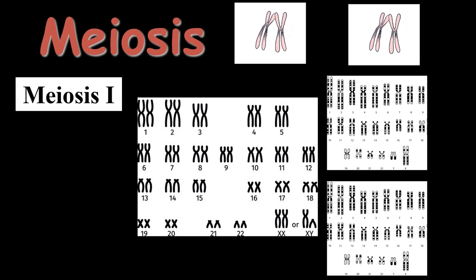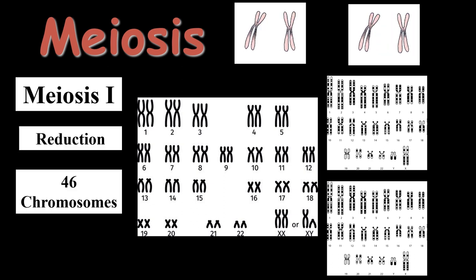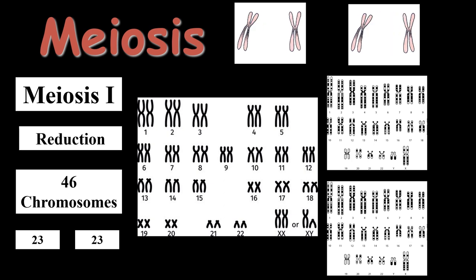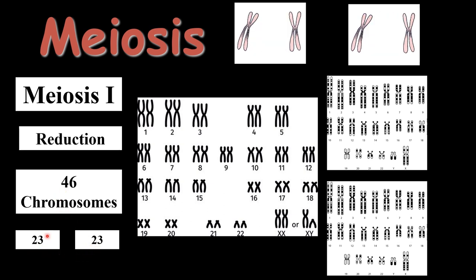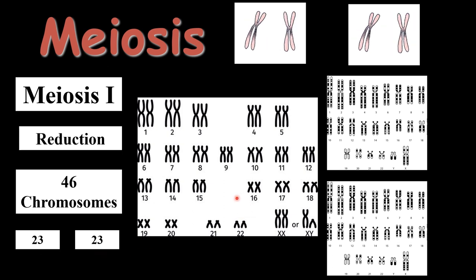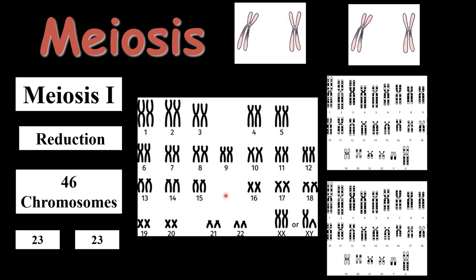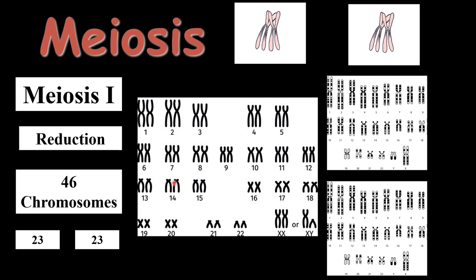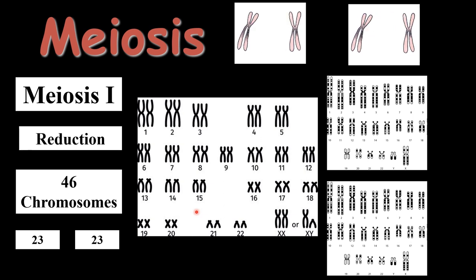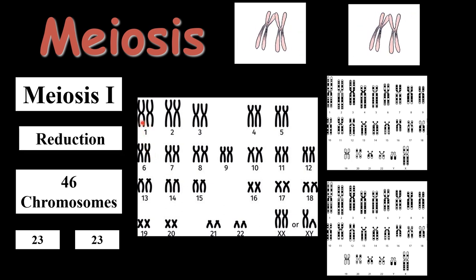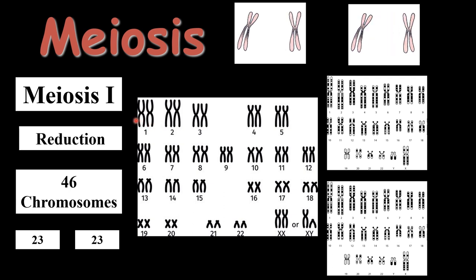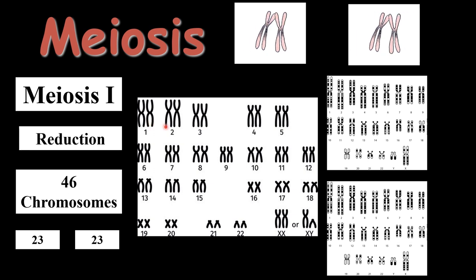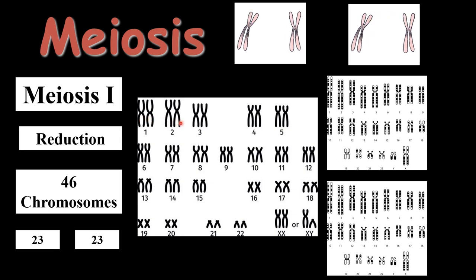In Meiosis 1, the reduction phase, the number of chromosomes are reduced from 46 to 23, as one parent cell gives rise to two daughter cells. In the human body, chromosomes are arranged in the form of homologous pairs — 46 chromosomes in 23 pairs. One chromosome comes from the father and one comes from the mother, called the paternal and maternal chromosomes respectively, making up the homologous chromosomes.